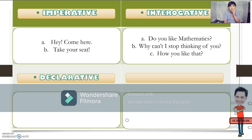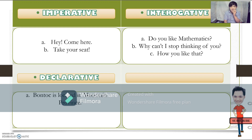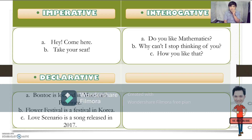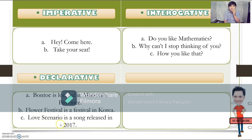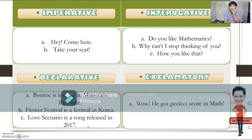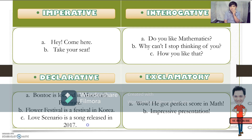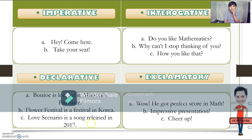The third one is the declarative sentence. Here are the examples: "Bontoc is located in Mountain Province." "Flower Festival is a festival in Korea." "Love Scenario is a song released in 2017." "Love Scenario is a great song." Next, the exclamatory sentence: "Wow, he got perfect score in math." "Impressive presentation." "Cheer up." So it expresses a strong feeling.